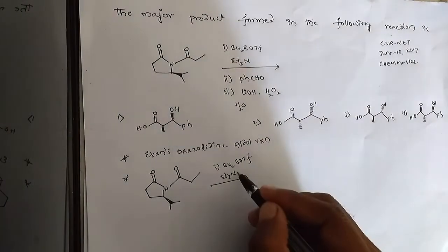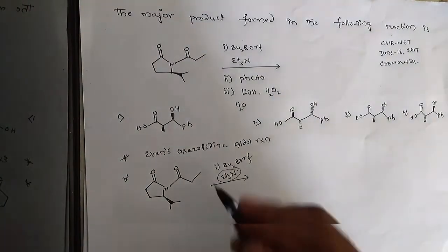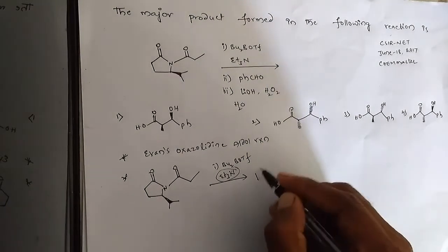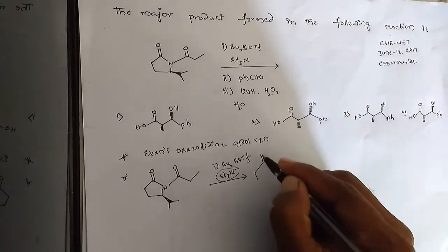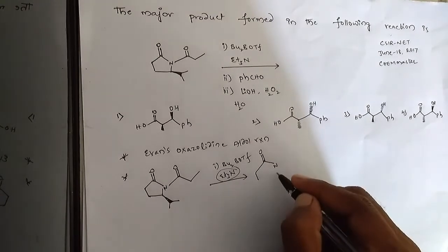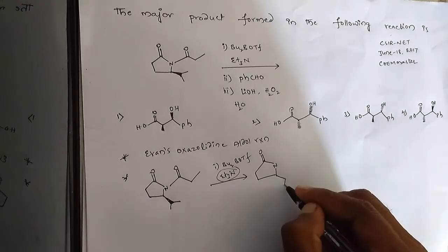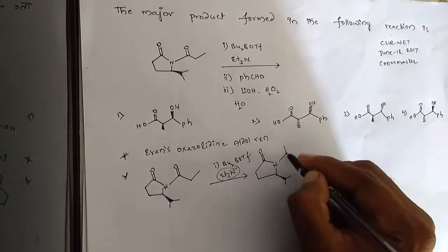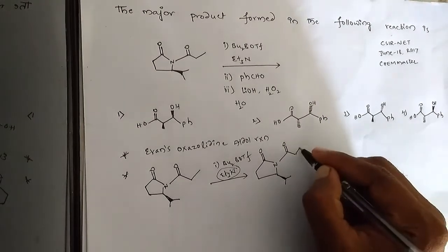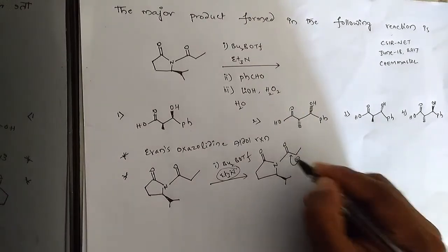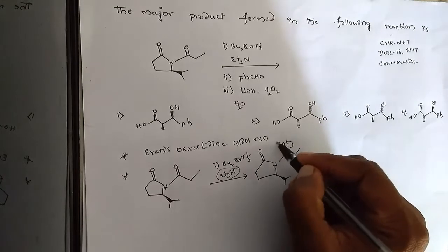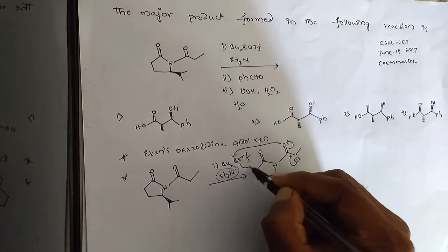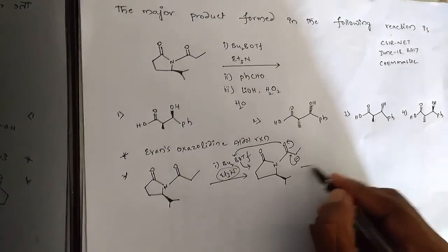The triethylamine base abstracts a proton from here. This goes on here, and it reacts with the boron. The triflate leaves, and from that you can get the enolate intermediate.